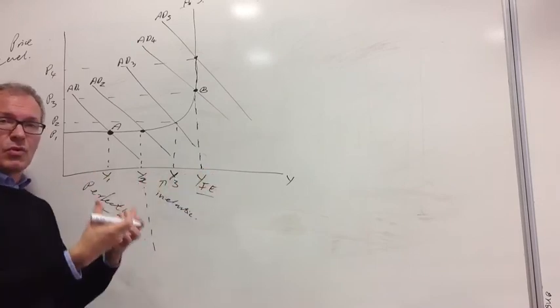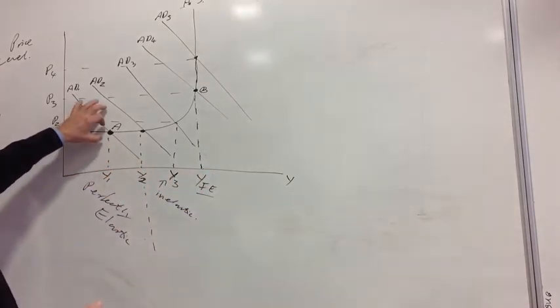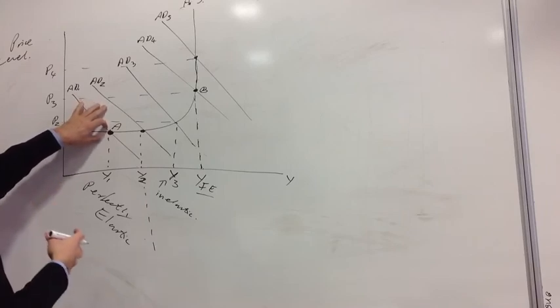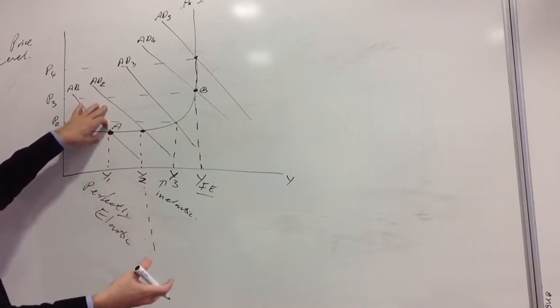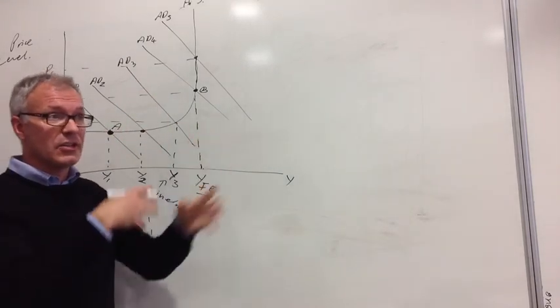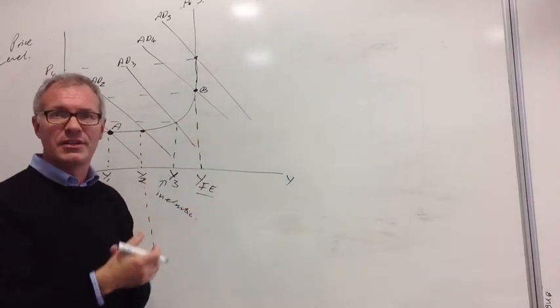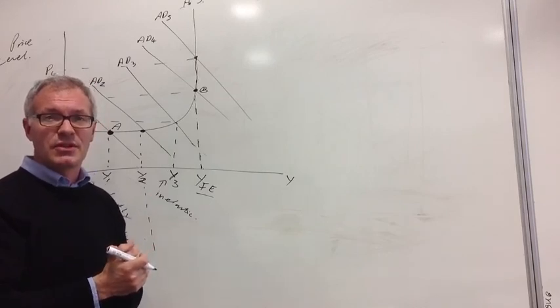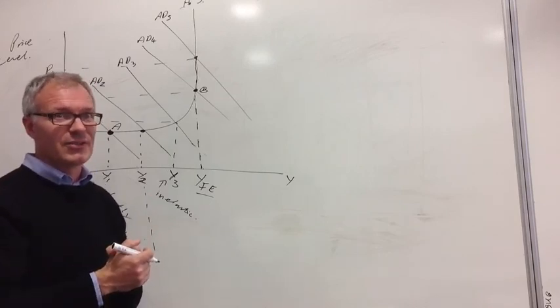And this is what Keynes argued, that the economy, in the long run, ends up at point A, and it won't naturally correct itself, as we saw with the neoclassical model, and go back to potential output. And again, this is a very fruitful thing to evaluate in the exam, depending on the question. Thanks a lot.